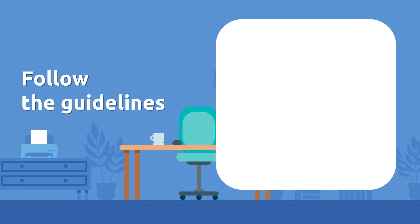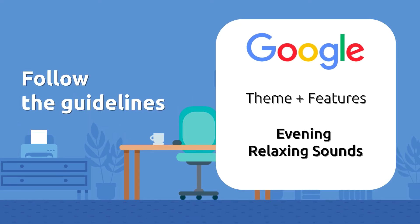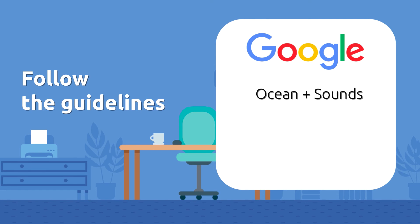Follow the guidelines. Google optimization guidelines on app naming suggest using a brand or theme name along with key function keywords.